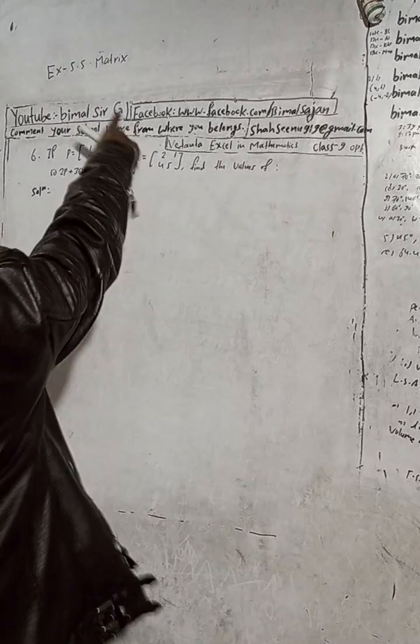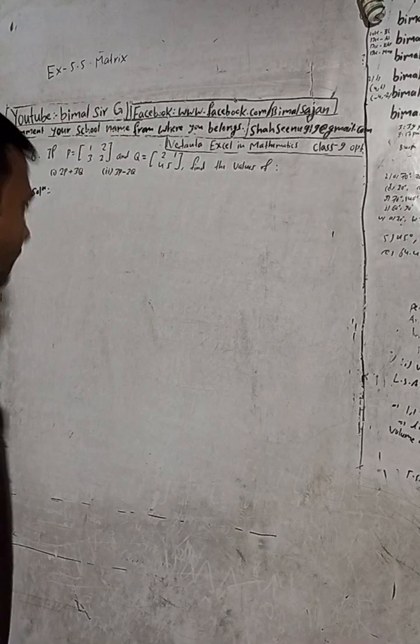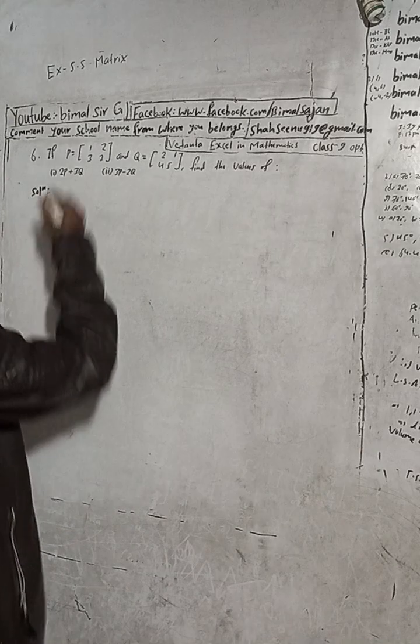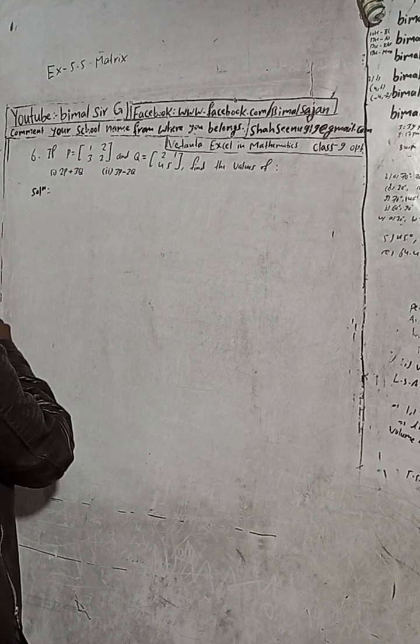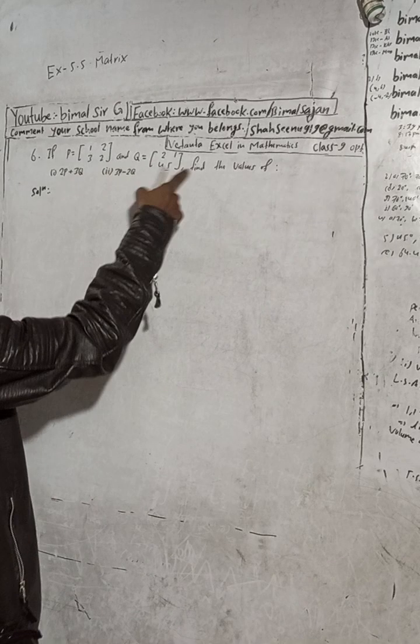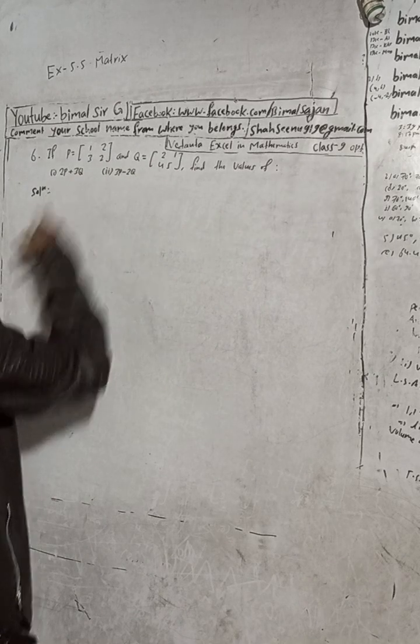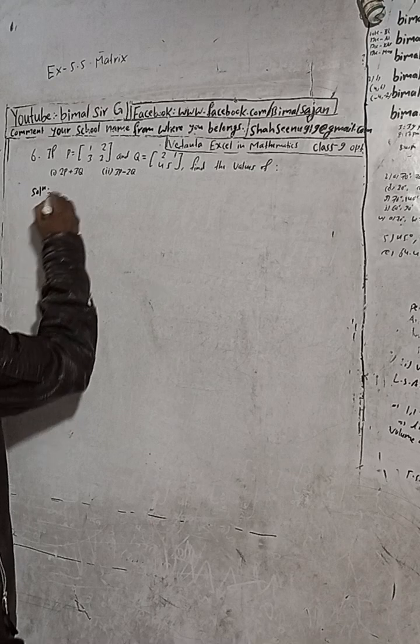Hi class 9 and 10 students, welcome back to Bhimalswarji YouTube channel. This is question number 6, exercise 5.5, matrix — Vedant Excel in optional mathematics class 9. Don't forget to check the playlist; you will get many solutions. If you don't find one, comment so that I can make videos. If P is equal to [1 2; 3 2] and Q is given, find the value of 2P plus 3Q.